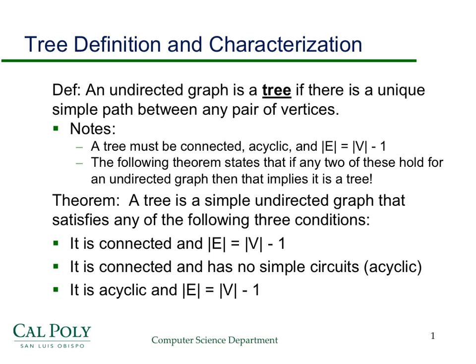Some quick review, just to remind everybody of some important definitions and theorems. An undirected graph is a tree if there's a unique, simple path between any pair of vertices. What that basically boils down to is that it's going to be connected and there aren't going to be any cycles. So a tree is connected, acyclic, and the number of edges is one less than the number of vertices. Any two of these three conditions holding for an undirected graph implies that it's a tree.